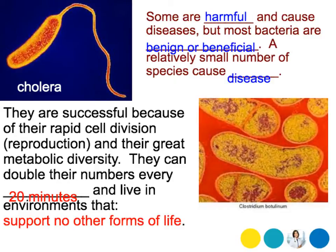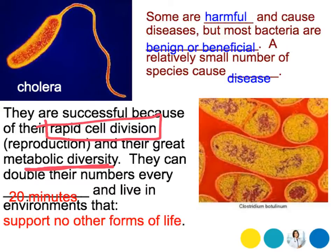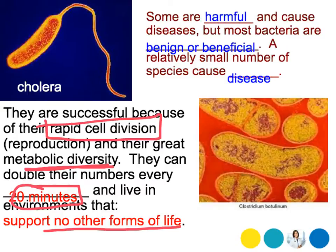Bacteria are very successful because of their rapid cell division — they divide very rapidly, as we saw in our graphing activity. They also have metabolic diversity, meaning they eat different things. They can double their numbers every 20 minutes and live in environments that support no other forms of life, like the depths of volcanoes or the bottom of the ocean.